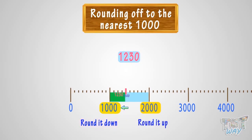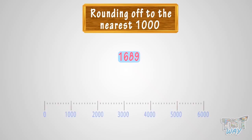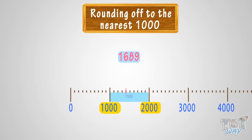Now let's take another example: 1689. We have to round 1689 to the nearest 1000. Where can you fit 1689 on this number line? It is somewhere between 1000 and 2000. As 1689 is above or after the 500 mark, so we will round it up to 2000.